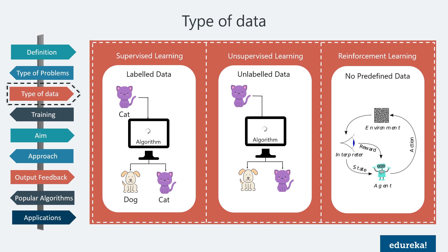In unsupervised learning, the machine is only given the input data — we don't tell the system where to go, so it understands the data by finding patterns. If we try to classify images of cats and dogs, the machine will form two groups without adding labels to the output — it just understands how cats look and clusters them together, and similarly for dogs. In reinforcement learning, there is no predefined data. The input depends on the actions taken by the agent, which are recorded as matrices serving as memory. The agent collects data by exploring the environment and does all the work from scratch.